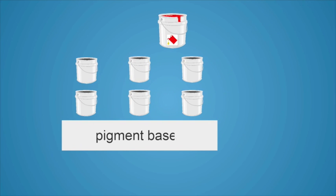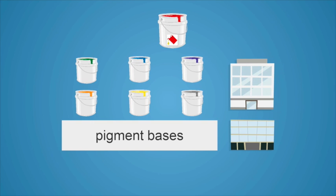For solvent-based printing inks, pigment bases are produced as a first step at so-called centers of excellence. As a next step, these intermediate products are further processed into customized finished inks at so-called blending centers.